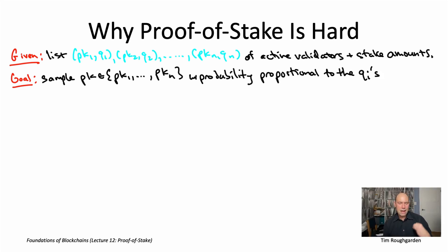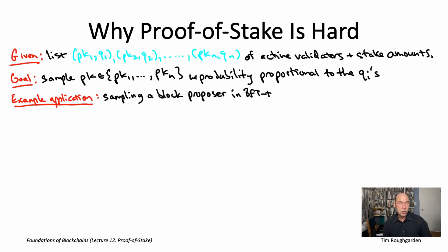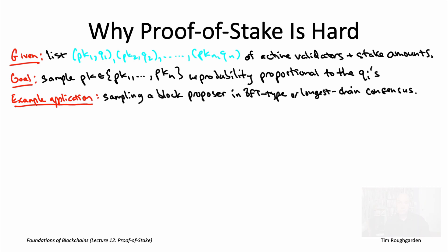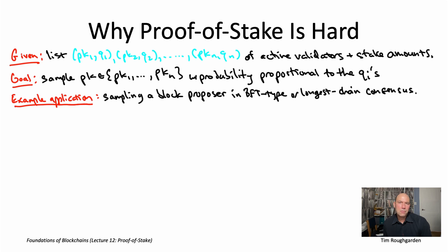How are you actually going to use such a random sampling procedure in a consensus protocol? One obvious thing to do is to sample a leader — a block proposer for a given round. Both longest chain consensus and most BFT type protocols like Tendermint have a notion of a round with a single designated leader that kicks off the round with a block proposal. You can interpret such a random sampling procedure as reducing the problem of designing a permissionless consensus protocol to a problem we've already solved: designing a permissioned consensus protocol.